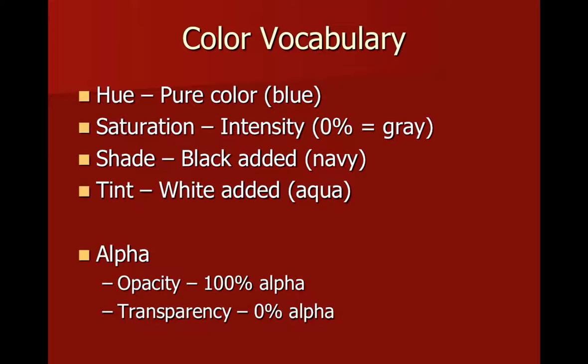Now if we add black to one of our hues we get a darker color which we call a shade, and if we add white to a hue we get a lighter color called a tint.